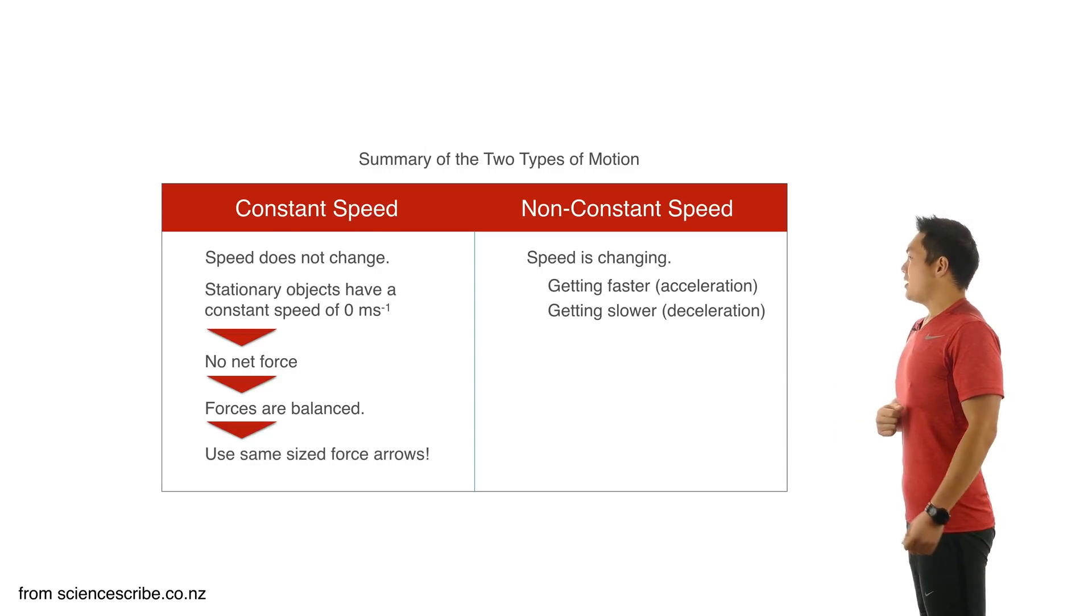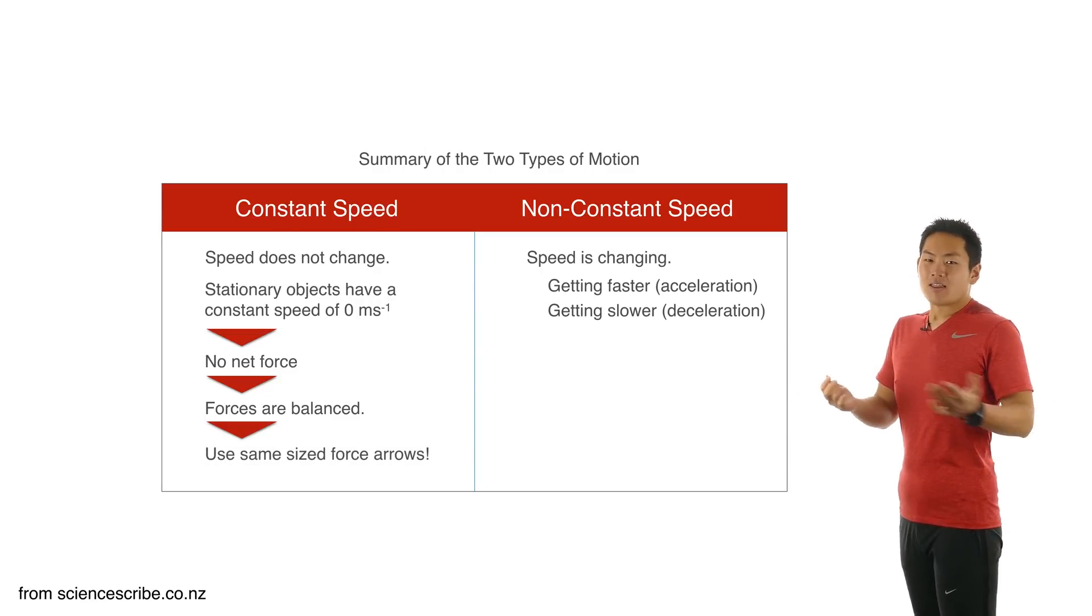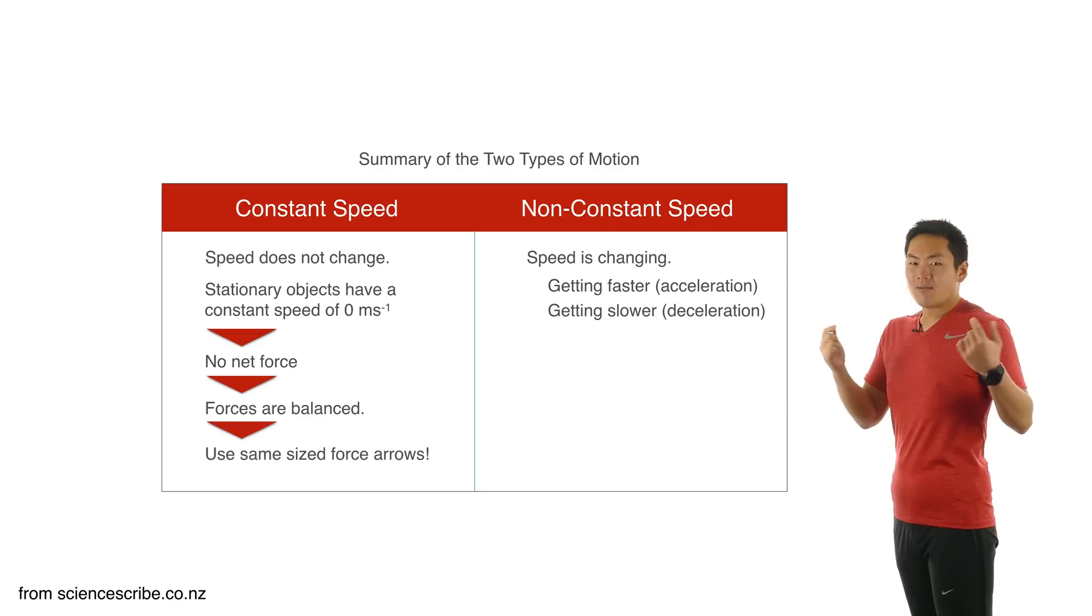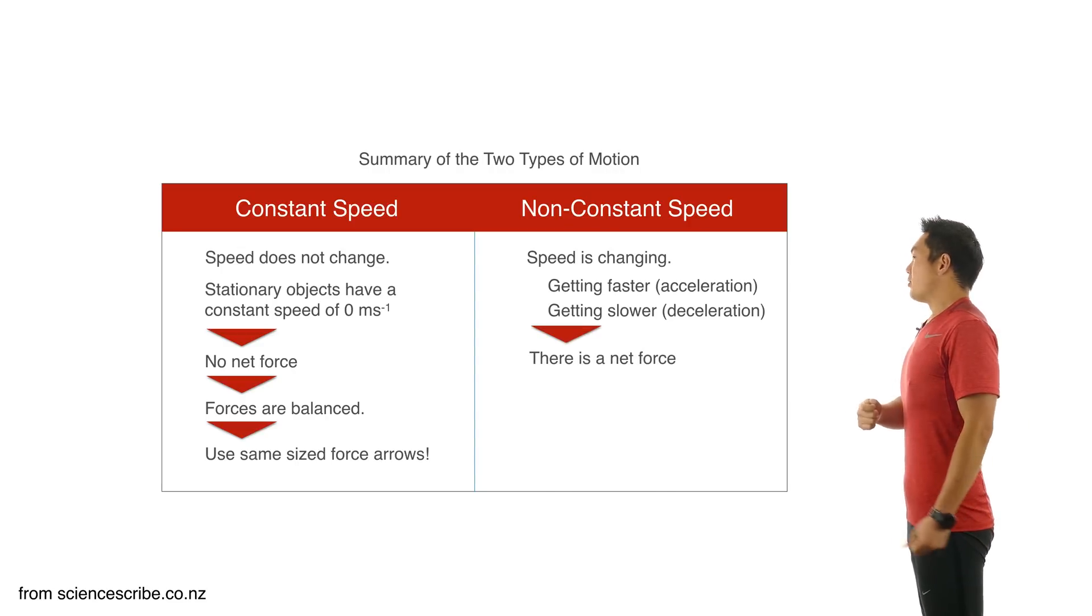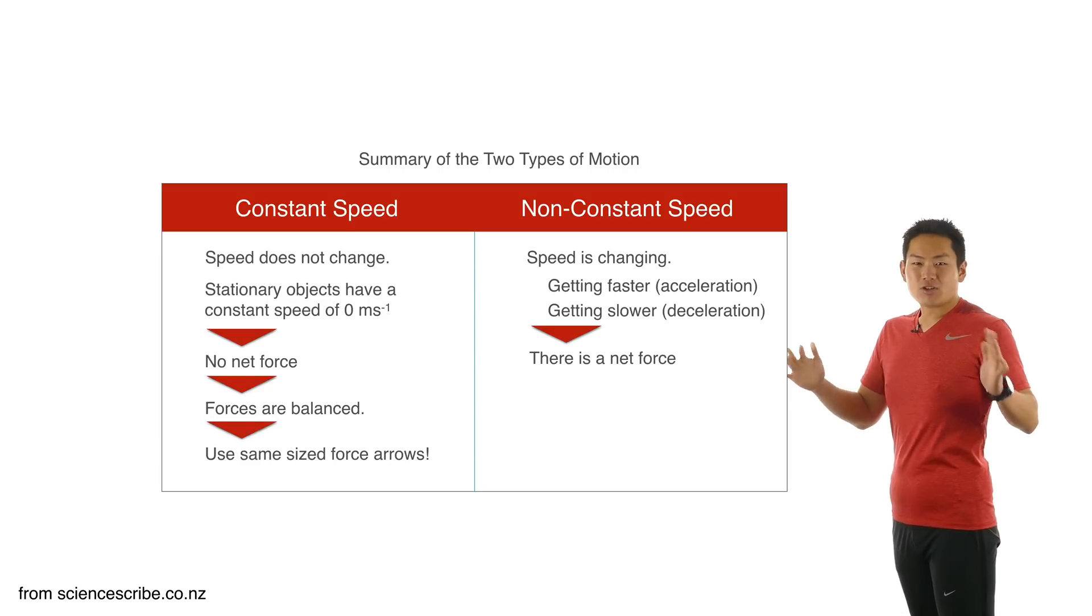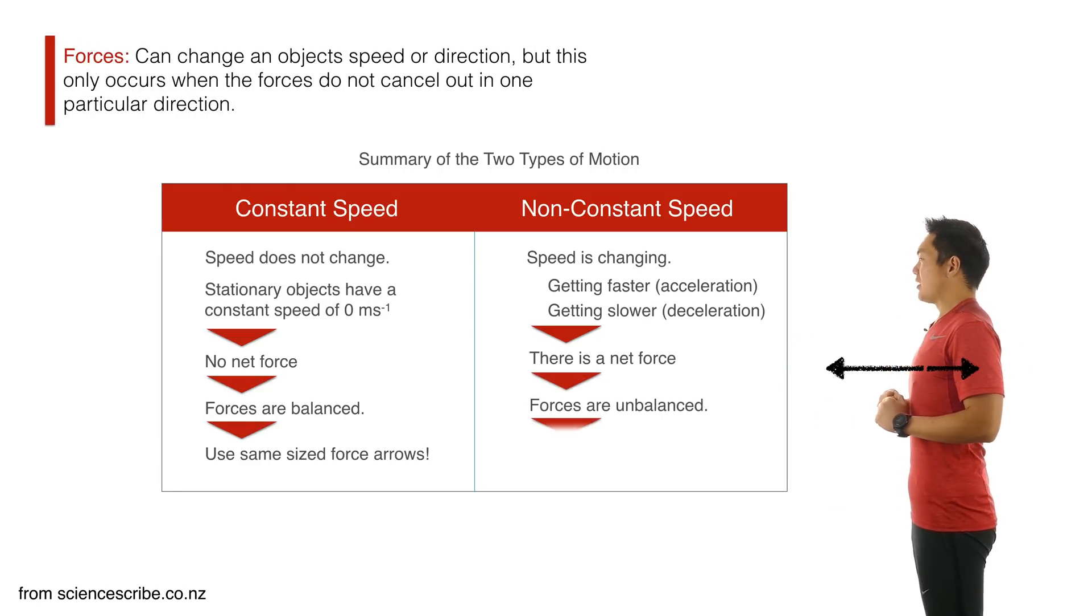For non-constant speed, I get the other case. So that means that your speed is increasing or decreasing, it means that there is a net force present, which means that your forces are not balanced, and you show that using different sized arrows on your force diagram.